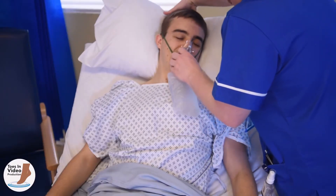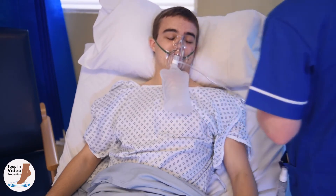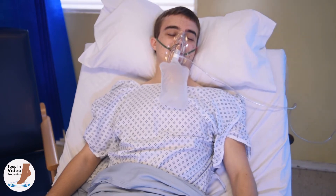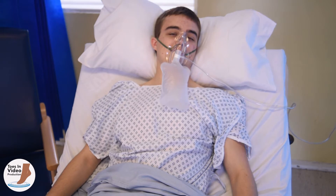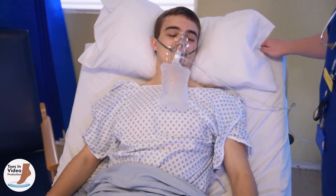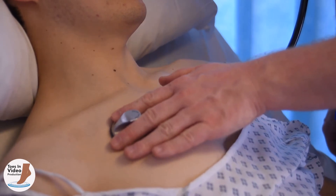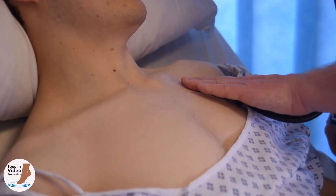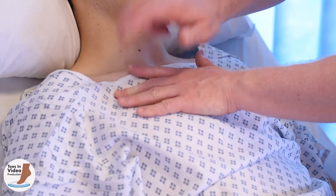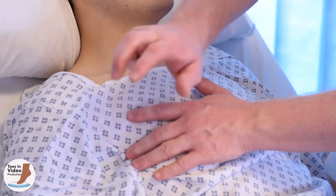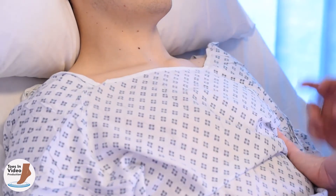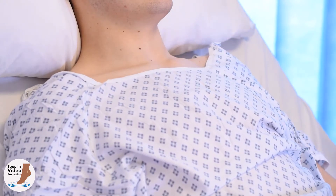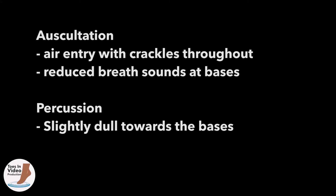John is using accessory muscles to help him breathe and is struggling to maintain his saturation. The nurse has administered high flow oxygen via non-rebreather mask to improve John's oxygen saturations. He will need to reassess this observation and titrate the amount of oxygen delivered. Other skills such as auscultation using a stethoscope to listen for air entry, crackles, wheezes or other added sounds, and percussion of the chest, can be used to observe for areas of hyper-resonance suggestive of air in the pleural cavity, or dullness suggestive of fluid or consolidation. In this case, auscultation reveals air entry with crackles throughout, with reduced breath sounds at the bases. The percussion note is slightly dull towards the bases.